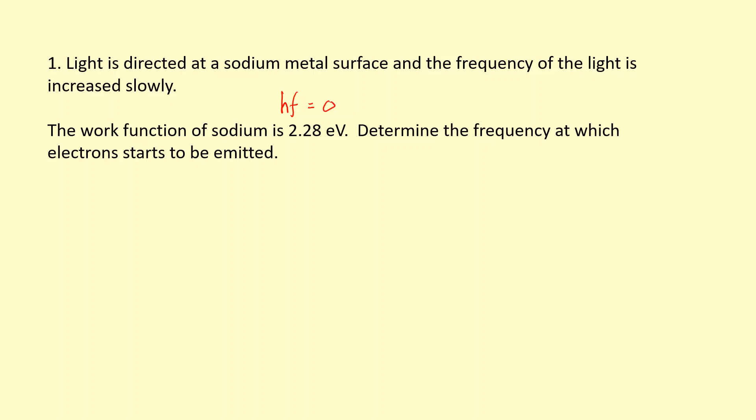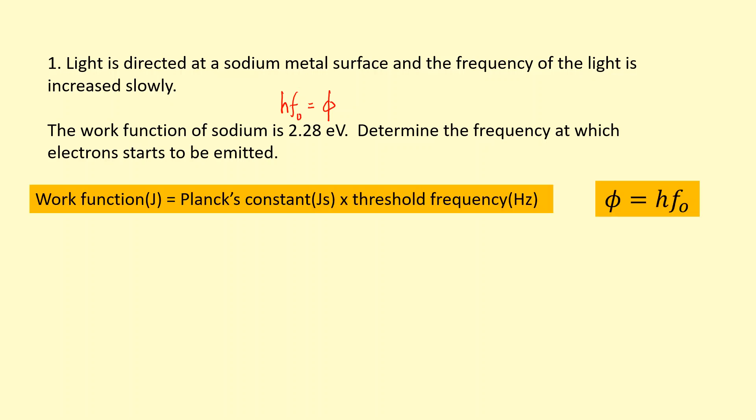Electrons will start to get emitted when the energy of the photon, hf, is equal to or greater than the work function, the minimum energy needed for the electron at the surface to escape. That means this is going to be the threshold frequency, the minimum frequency for it to escape. So we have this equation here: the work function is equal to Planck's constant times the threshold frequency. To use this equation, firstly write it down.